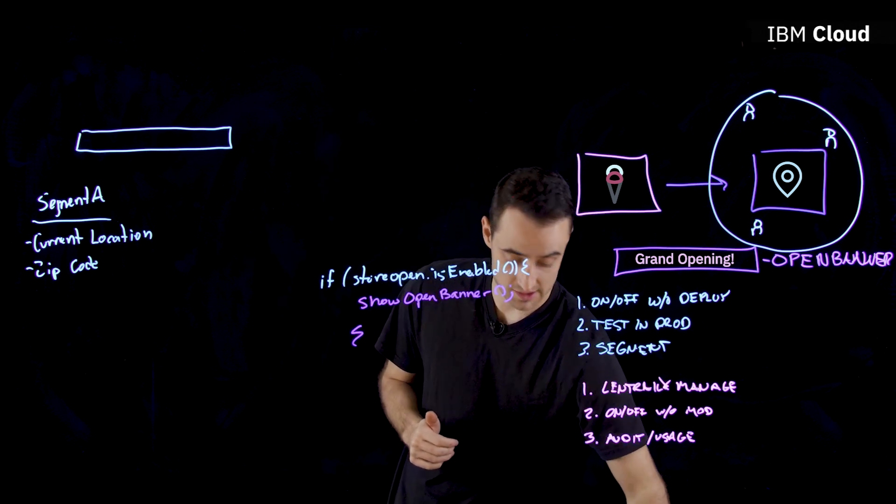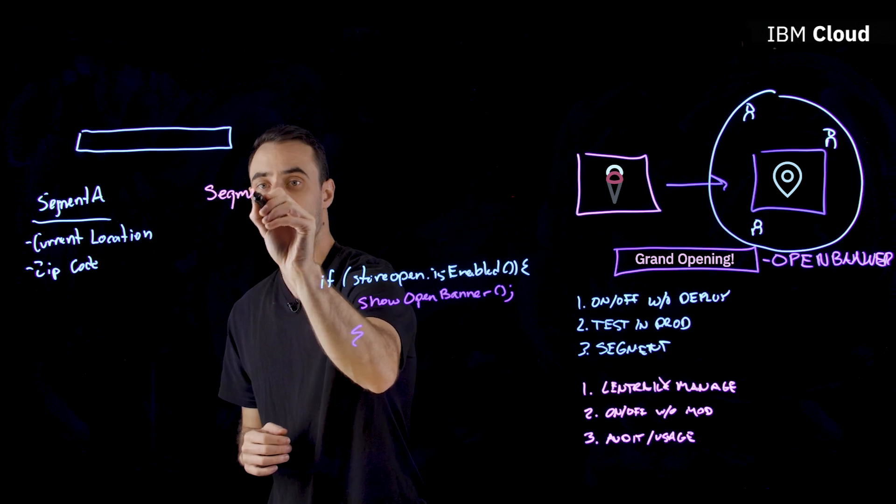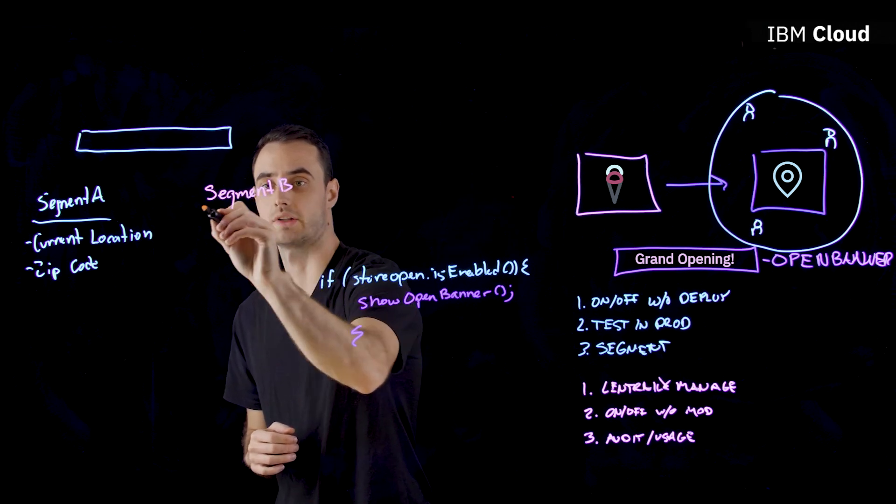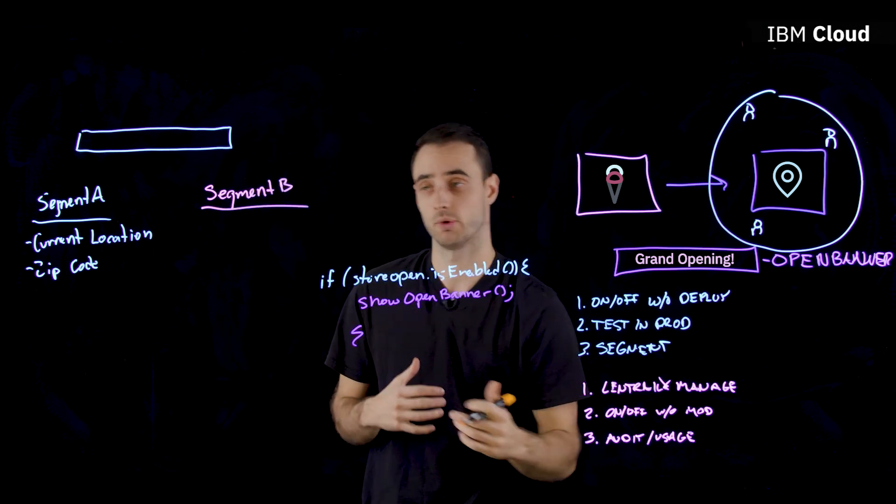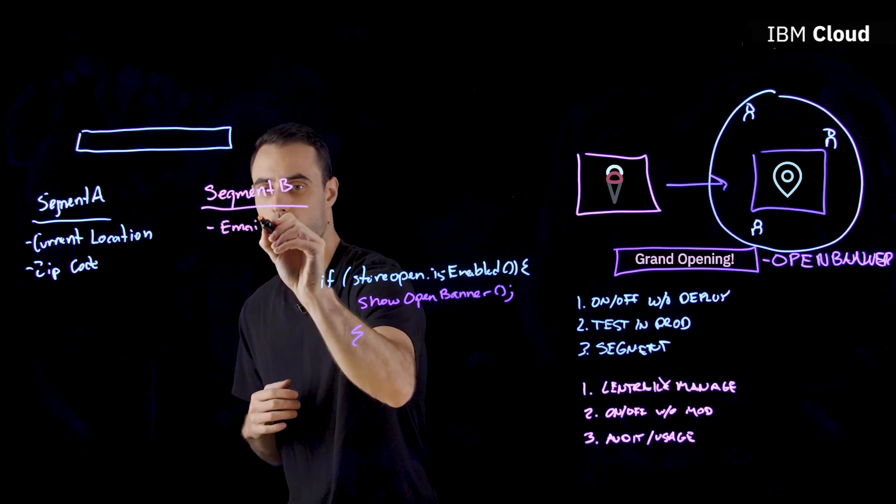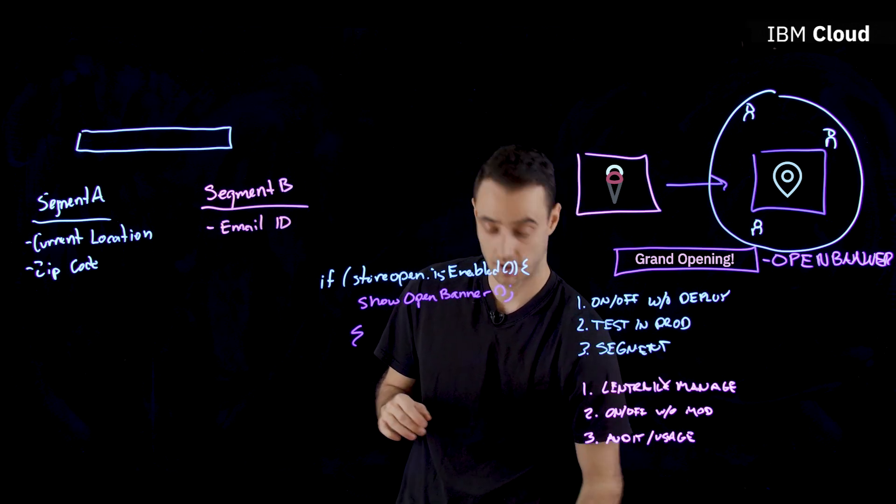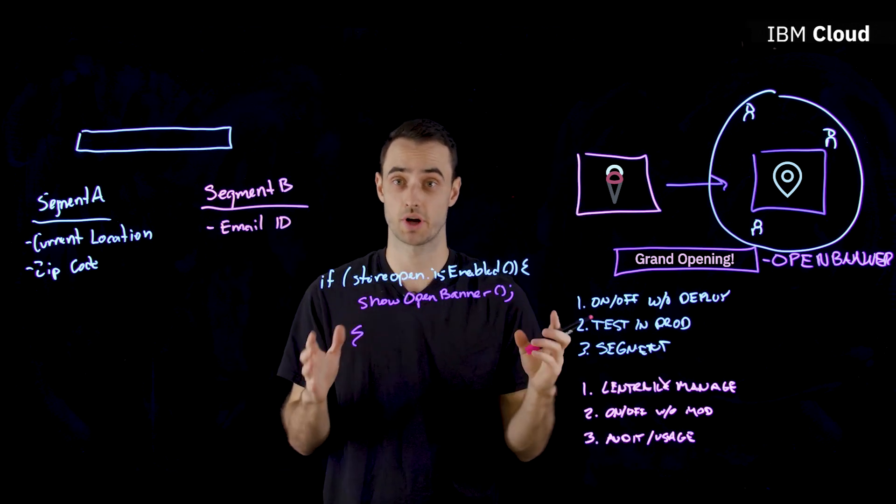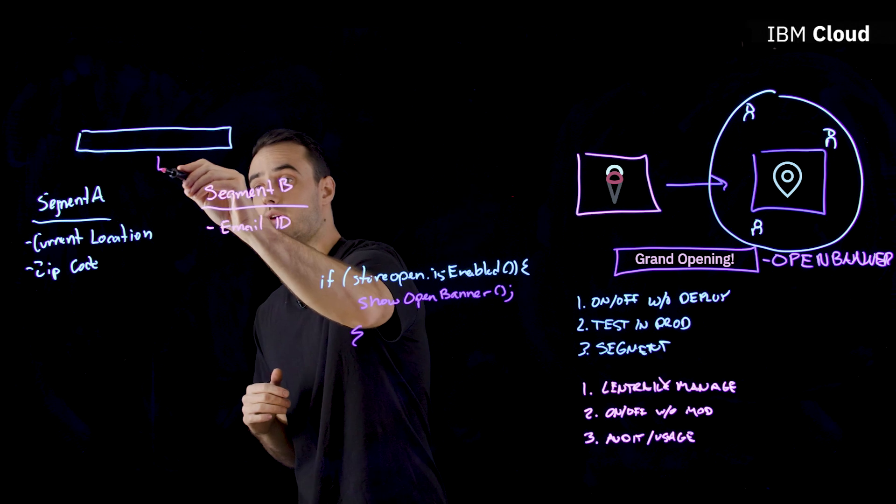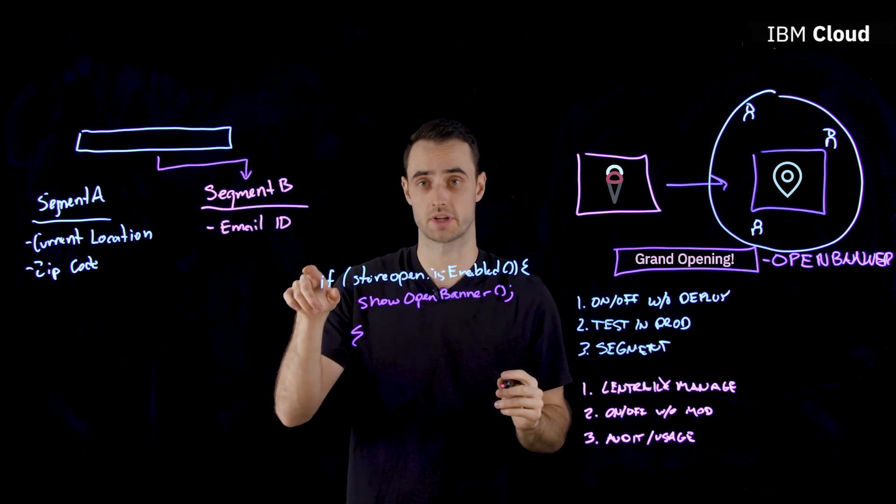But before we do that, we want to test the feature out on our own employees. So we would have segment B of our testers. Because we want them to be our employees, the attribute might be email ID. Now we can effectively test our feature in production by flipping this toggle on.